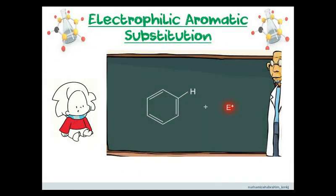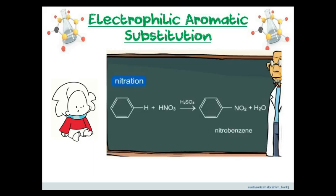The key step of each substitution reaction is an attack by an electrophile on the aromatic ring, leading to the replacement of a hydrogen atom in the ring with another atom or group of atoms. Such a reaction is referred to as electrophilic aromatic substitution.